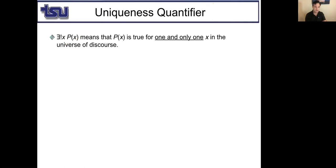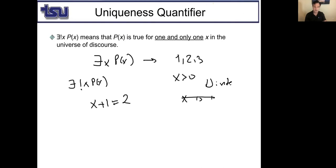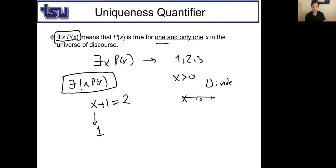The existential quantifier ∃x P(x) asserts there is at least one x — there may be multiple. However, the unique existential quantifier ∃!x P(x) means exactly one x satisfies P(x). For example, 'x + 1 = 2' has only one solution, x = 1. So ∃!x means P(x) is true for one and only one x.